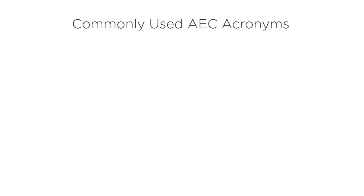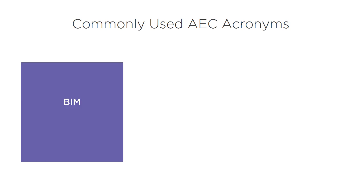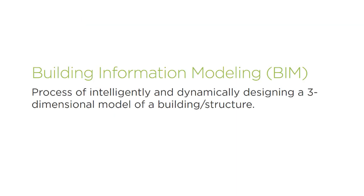Before we really dive into the implementation process, let's review some common acronyms associated with the AEC industry. Let's start with Building Information Modeling, or BIM. BIM is a term that has been thrown around the AEC industry for quite some time. In general, BIM is the process typically applied to and associated with intelligently and dynamically designing an actual building or structure, where architects, engineers, and designers can visualize and anticipate the true constructability of a project.